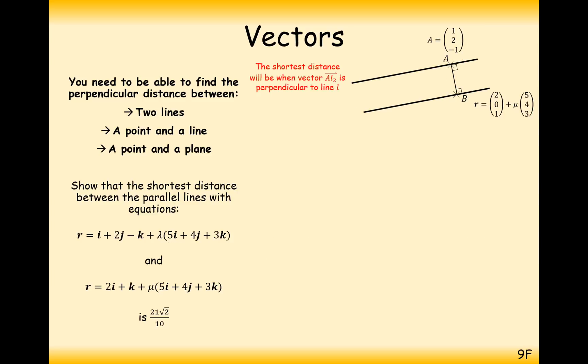So we've seen how we do this before in a previous video. The shortest distance between A to L2 is going to be the perpendicular line. So we need to make sure that the vector from A to L2 will meet the line L2 at a right angle. So first of all, what we need to work out is this direction vector from A to L2. So the way we do that is we do L2 minus A and simplify. So we get 5 mu plus 1, 4 mu minus 2 and 3 mu plus 2.